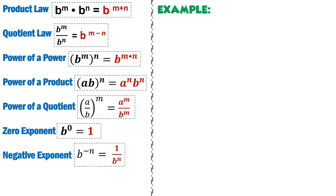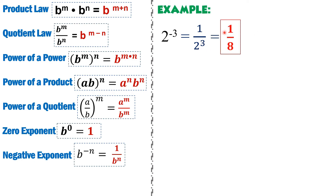Another law is the negative exponent. Any expression raised to a negative number — you must get its reciprocal to make the exponent positive. For example, 2 raised to negative 3: get the reciprocal of 2. Since 2 is over 1, write 1 in the numerator and 2 in the denominator. Once you get the reciprocal, the negative exponent automatically becomes positive, giving 1 over 2 raised to 3. Simplifying: 2 times 2 times 2 equals 8, so the answer is 1 over 8.